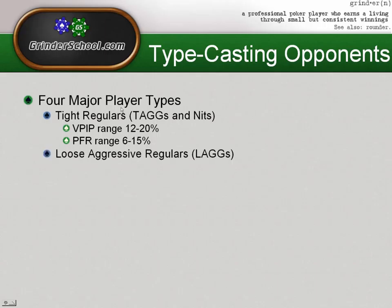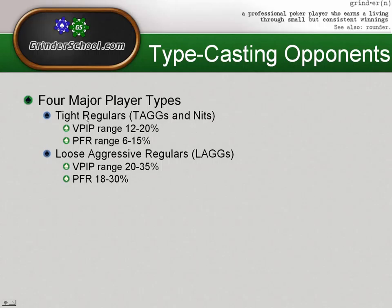The next category are players that will give you a lot of trouble — probably the best players at all levels, the best hand readers with the highest win rates. These are the loose aggressive regulars. At 6-max this is players with VPIPs in the range of 20 to 35% and pre-flop raise ranges from 18 to 30%. Your typical lag might be someone running 27-22 at 6-max. The very loose aggressive regulars running above 30% VPIP with upper-20s pre-flop raise are probably the best players at each stake and the toughest to adjust to.